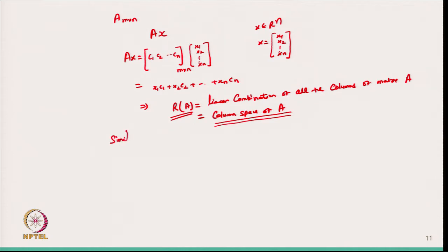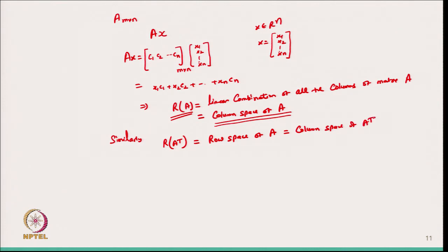Similarly, if we define the range space of Aᵀ, when we take the transpose, the columns of A become the rows. So the range space of Aᵀ equals the row space of A, which we can also write as the column space of Aᵀ. The column space of Aᵀ is the same as the range space of Aᵀ, and it is equivalent to the row space of A. So we have a column space and a row space.